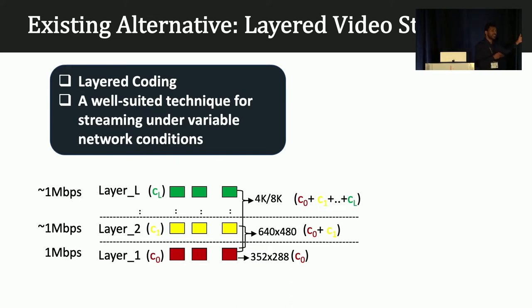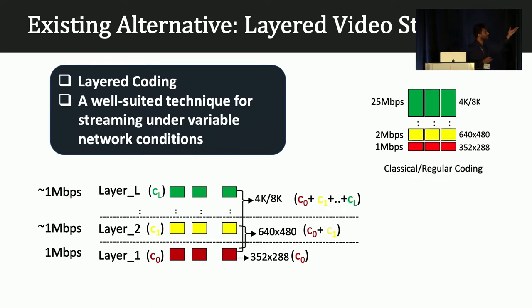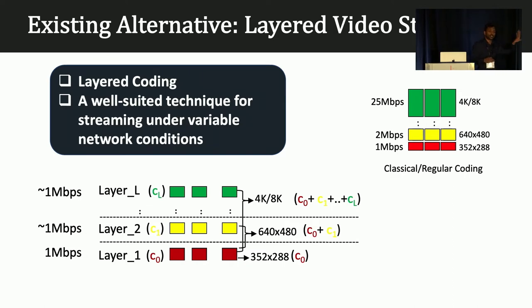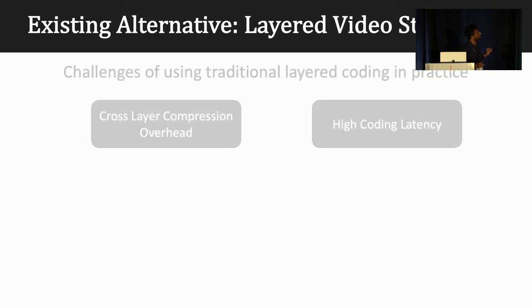The advantage of this approach is that as network conditions change, you can play with these layers — incrementally downloading them and combining them to get better quality. This is unlike the current practice of encoding video into multiple independent versions that cannot be combined together. So this is a very well-suited approach for these variable networking conditions.